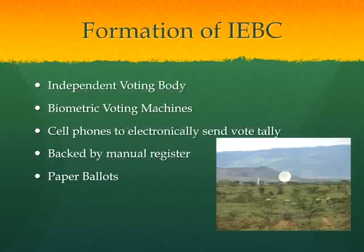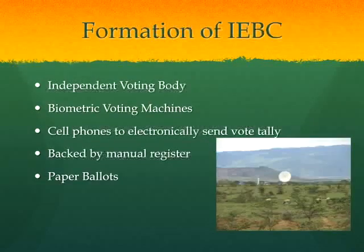As part of this election and the 2010 Constitution, a new independent regulatory agency was formed: the Independent Electoral and Boundaries Commission, or IEBC. It has nine commissioners and is led by Isaac Hassan. The IEBC is the only organization with the authority to count votes, manage elections, and announce winners at the national level. There was also an effort to increase technology: biometric voting machines, thumbprint identification, and specially organized cell phones to send an electronic tally to the National Tallying Center — all backing up the manual voting process.